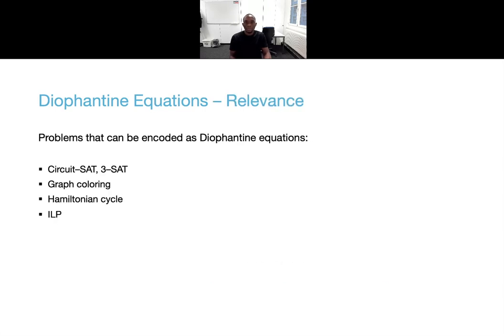Diophantine equations are relevant in cryptography and computer science in general, as several problems, and especially several NP-complete problems, can be encoded as polynomial equations. These, for instance, include circuit SAT, 3-SAT, the graph coloring problem, the Hamiltonian cycle problem, and the integer linear programming problem.